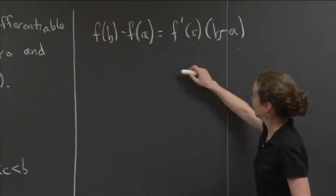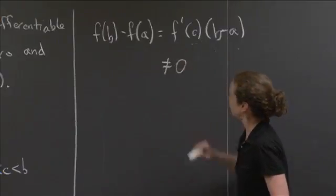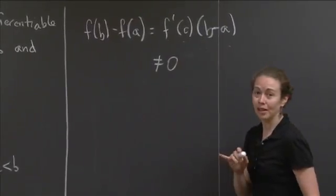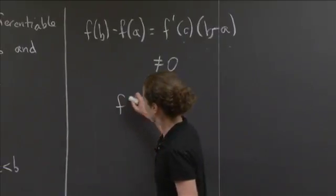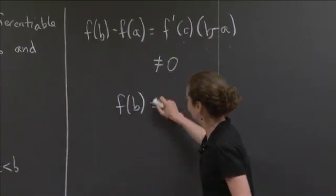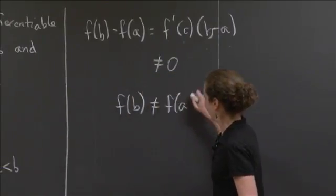The only way to get a product of two numbers to be zero is if one of them is zero. So, in fact, this product is not equal to zero. The fact that this product is not equal to zero tells us f(b) minus f(a) is not equal to zero. And that alone is enough to conclude that f(b) is not equal to f(a).